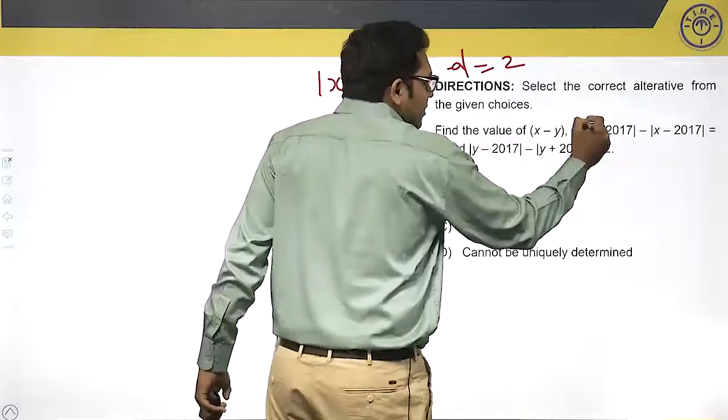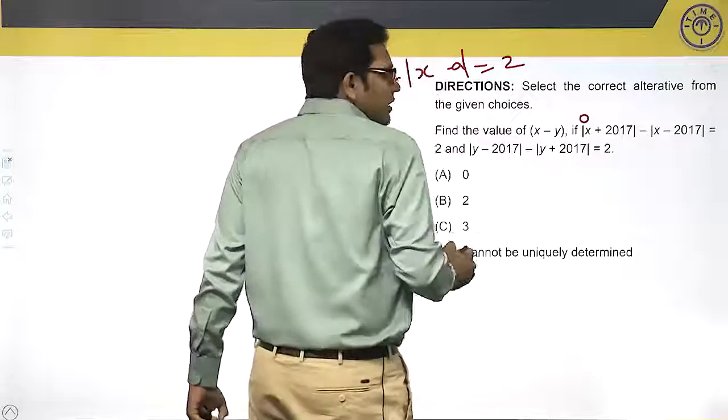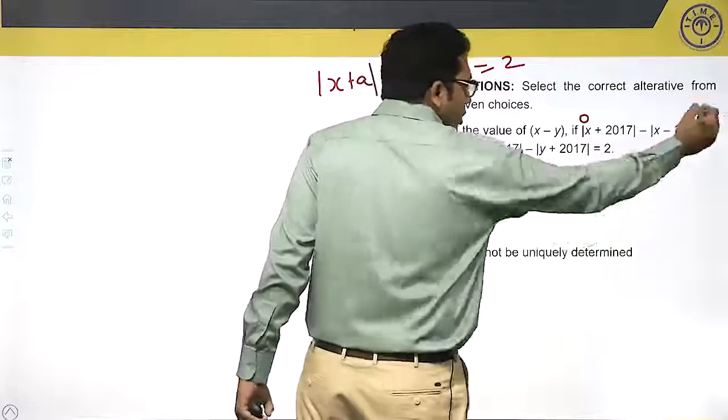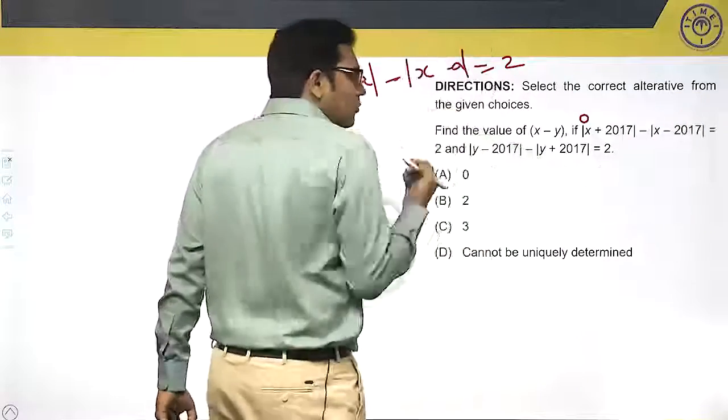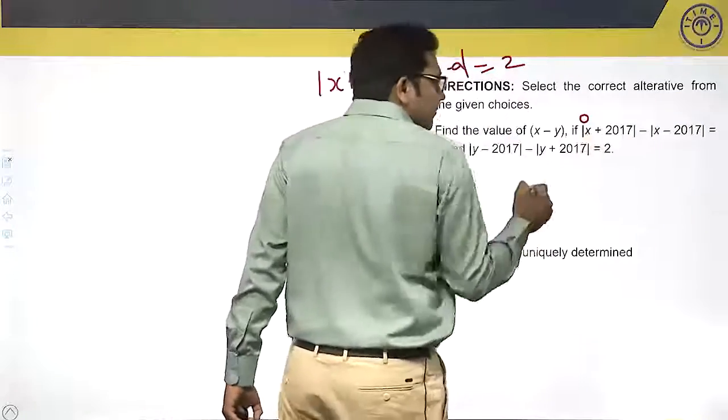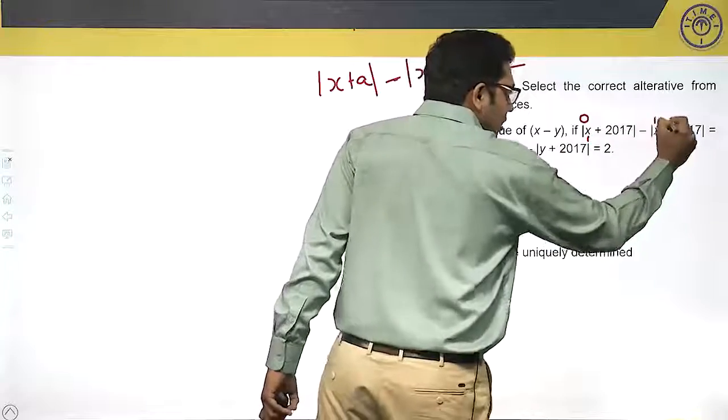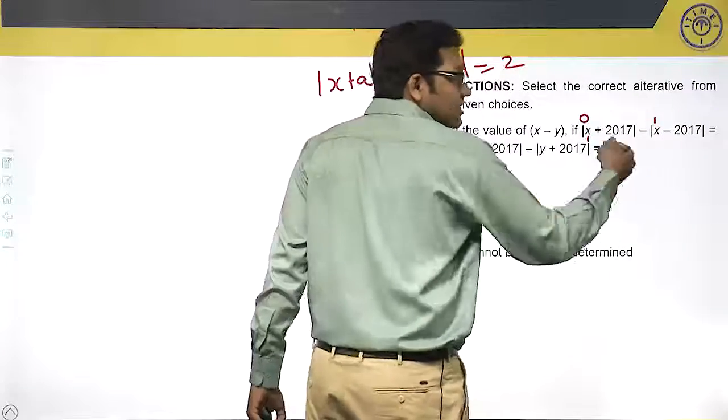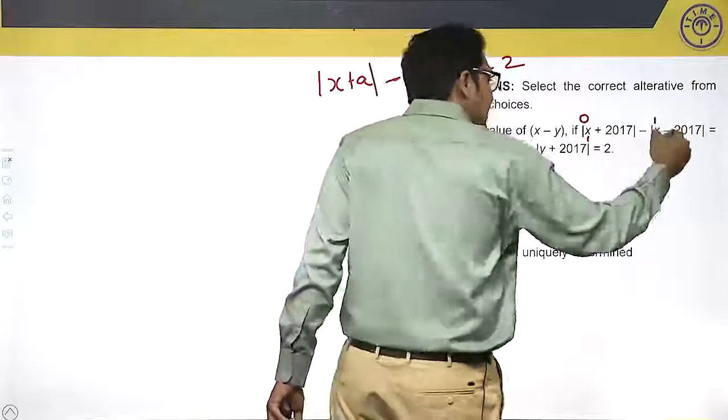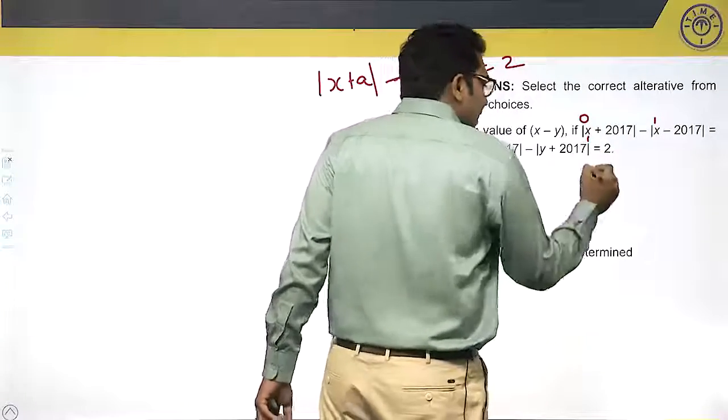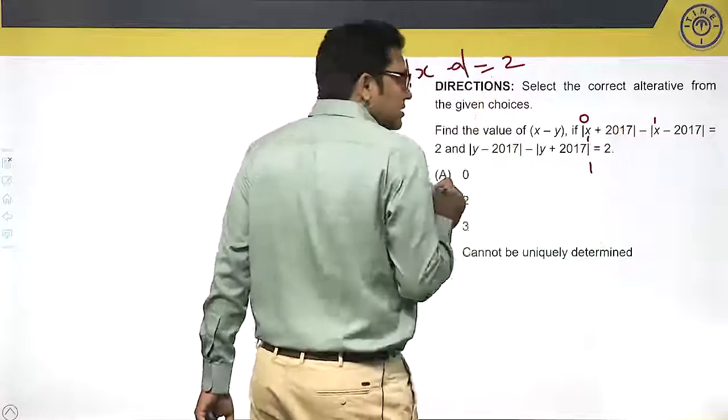Let's go by trial and error. Let's say x is 0. When x is 0, |2017 + 0| - |0 - 2017| gives 0, so x cannot be 0. If x is 1, 2017 + 1 = 2018, and 1 - 2017 = -2016, which becomes 2016. Since I have modulus, 2018 - 2016 = 2. So when x equals 1, the value satisfies.